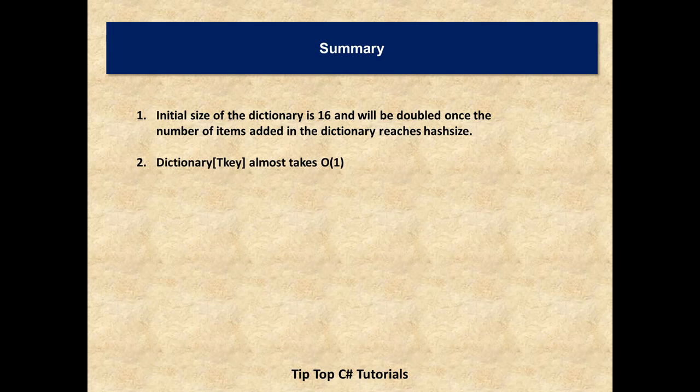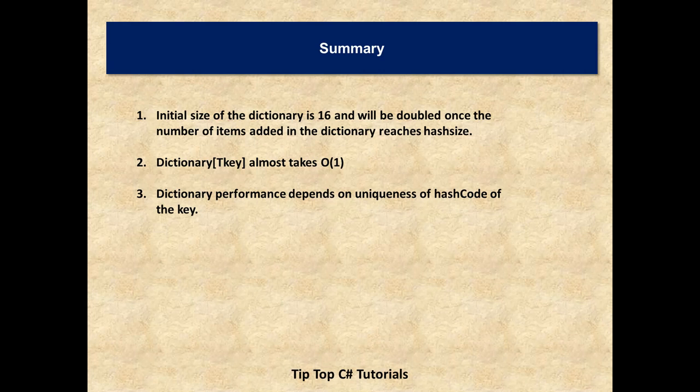Dictionary retrieval using key almost takes big O of 1. Dictionary performance depends on uniqueness of hash code. If every hash code returns the same key then it will lead up to the same index which increases the time taken. Imagine if all the items that you add will lead up to the same index, imagine at index 8. Then whenever you are retrieving it leads up to index 8 but again it has to compare each and every item. That is why the performance of dictionary depends on the uniqueness of hash code.